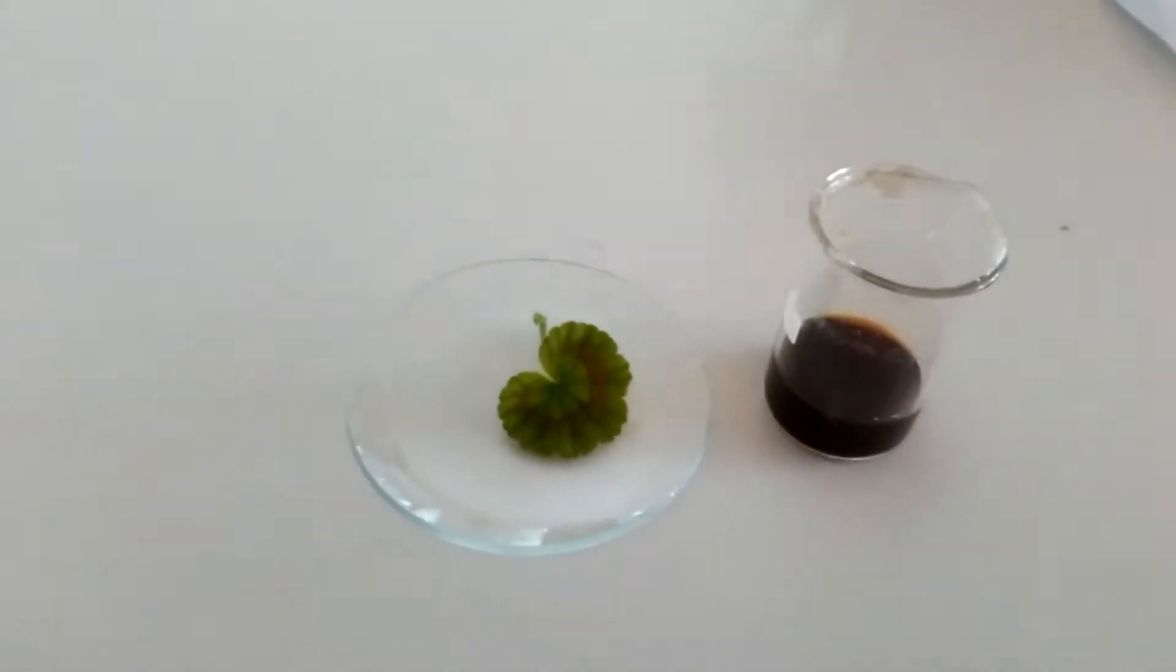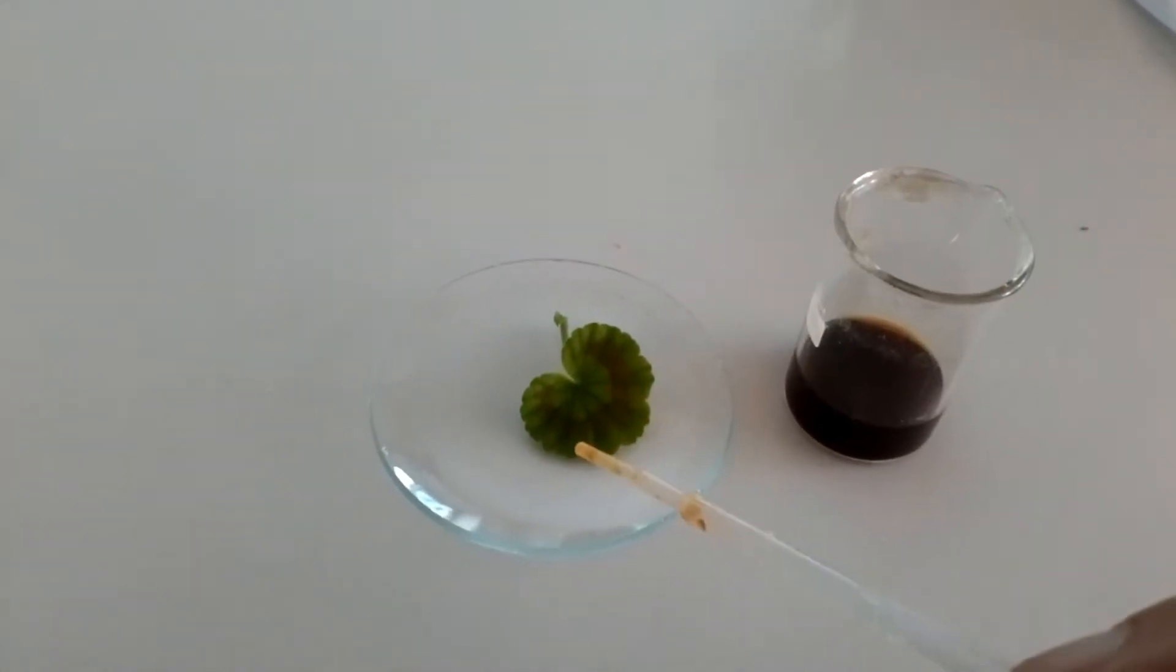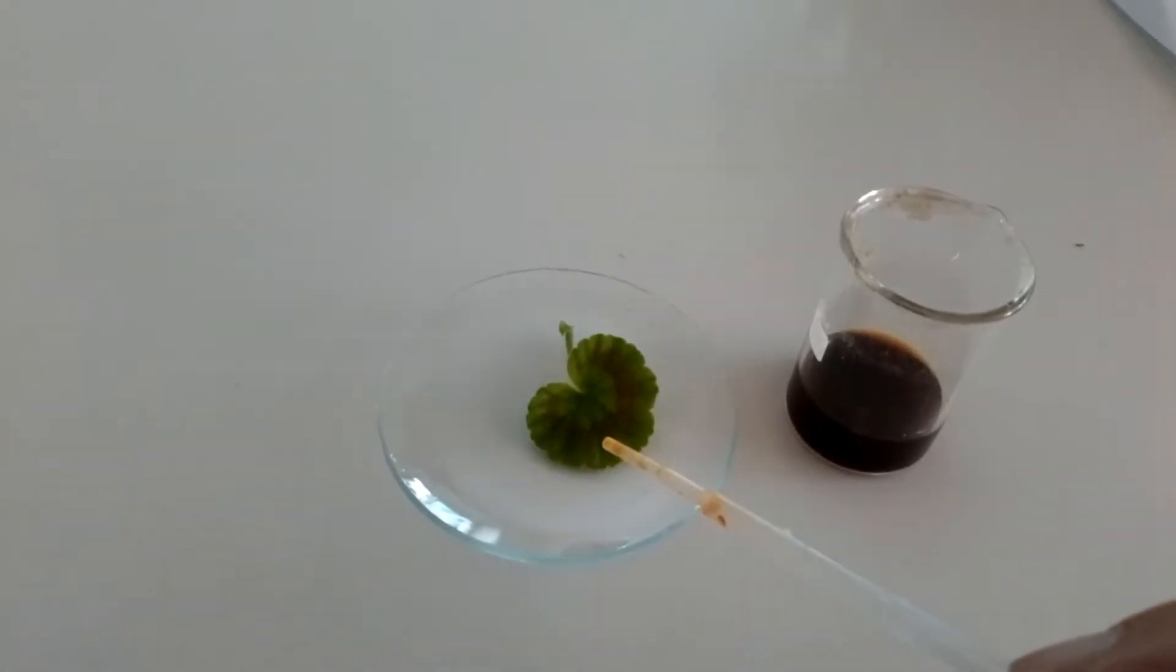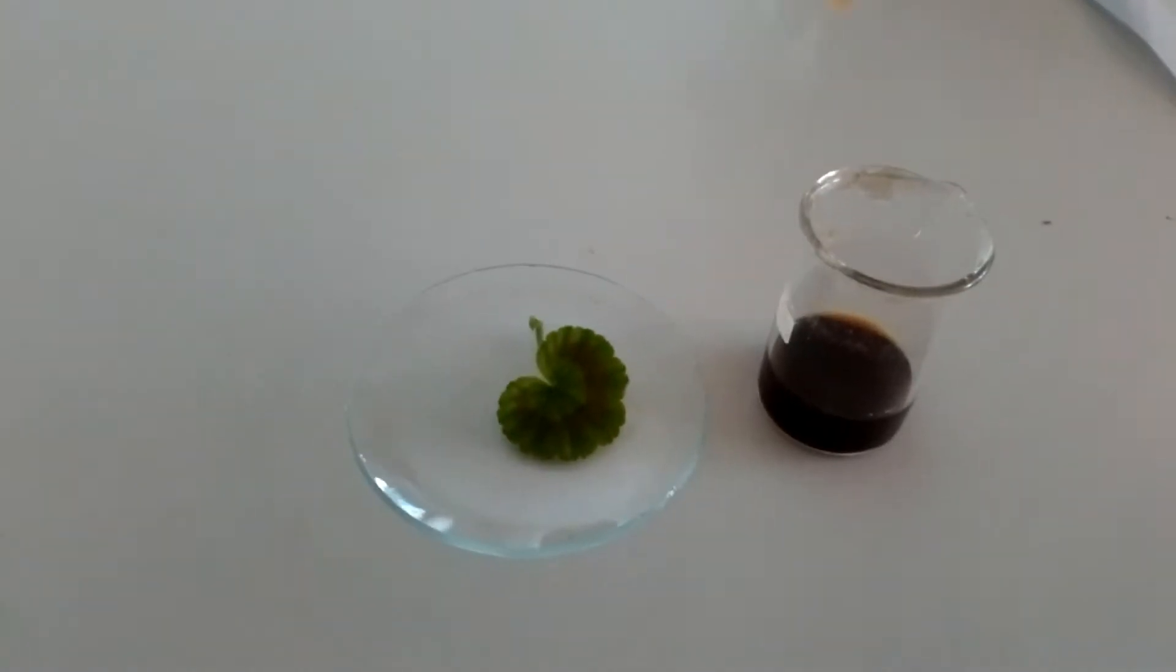Now the first thing we've got to realize here is that the starch, any starch inside the leaf here, is all locked up inside the cells. We know that the cells have got a cell wall around them made of cellulose.